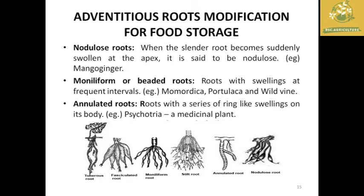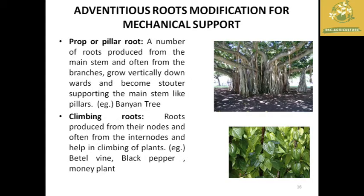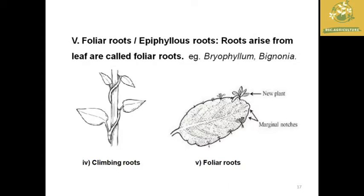For mechanical support, adventitious root modifications include: prop or pillar roots, produced from the main stem and growing vertically downward from branches to support the main stem; example: banyan tree. Climbing roots are produced from nodes and internodes for climbing; examples: betel and black pepper. Foliar or epiphyllous roots are found in Bryophyllum and Bignonia — leaves touching the soil produce new roots at their margins and can grow as new plants.